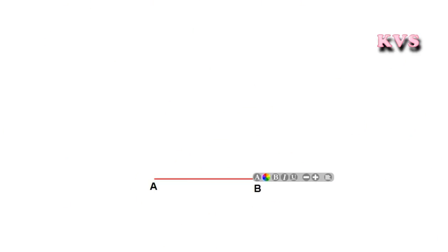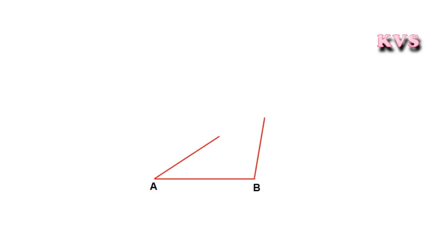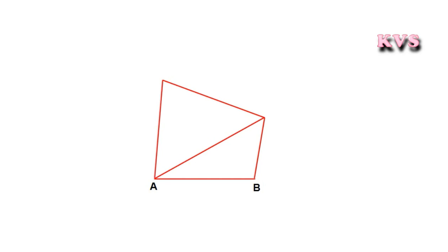Let us know how to construct a quadrilateral when four sides and the diagonal are given. First, draw a rough sketch of the quadrilateral ABCD with the given data.